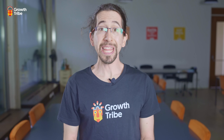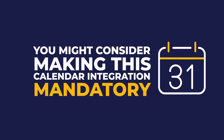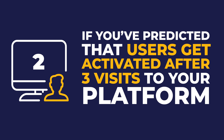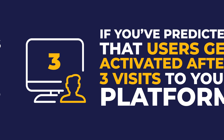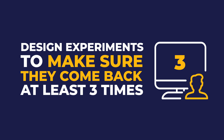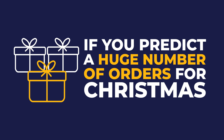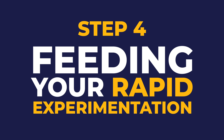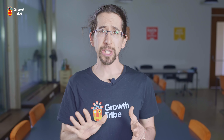Step three: increasing the quality of your ideas. We are now diving into the growth process, particularly the first stage — gathering ideas. With all the results we've discussed already, you now have much more potential to come up with great experiments. For example, if your prediction model shows that doing a calendar integration helps retaining customers, you might consider making this calendar integration mandatory. Or if you predicted that users get activated after three visits to your platform, you want to design experiments to make sure they come back at least three times. Or if you're predicting a huge number of orders for Christmas, you might want to improve your shipping capacity.